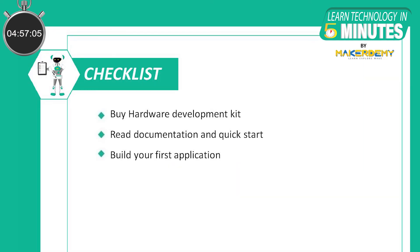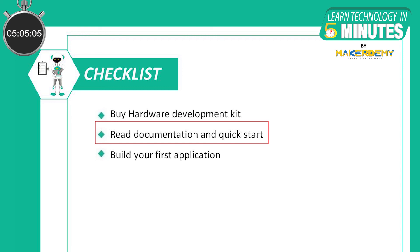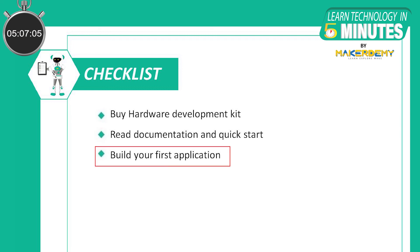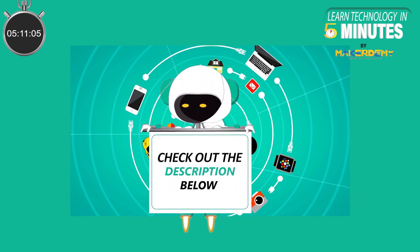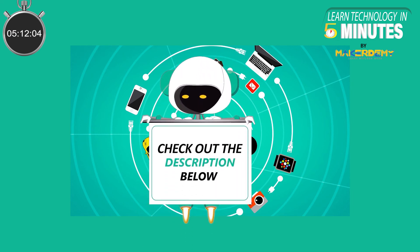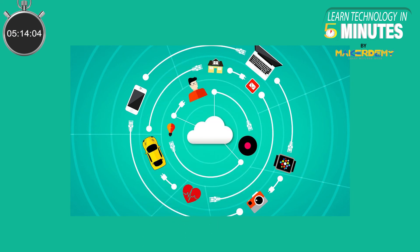To start using Azure Sphere, we need to follow three steps: buy a Hardware Development Kit and install Azure Sphere; read the documentation and quick start to learn more; and build your first application. Please visit the resources in the video description to get links for getting started with Azure Sphere and building your first application.